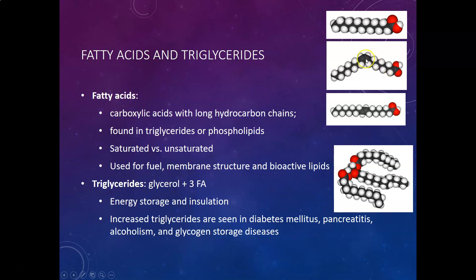In unsaturated fatty acids, there will be one or more double bonds. A double bond between two carbons causes a kink to be formed in the chain — the more double bonds, the more kinks. Because of the double bond, two hydrogen atoms are missing, and the remaining atoms are bound on the same side, which creates this kink. This is a healthy, normal unsaturated fatty acid found in nature.